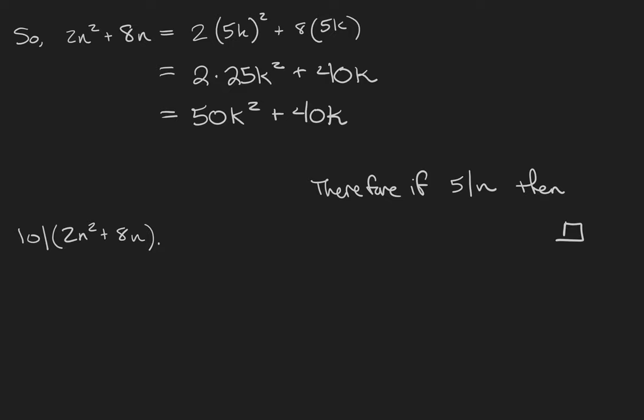Remember we're trying to prove that this is divisible by 10, so what we should do is pull a 10 out of the expression. So we get 10 times (5k² + 4k). Fortunately we can do that, otherwise this theorem may not be true.